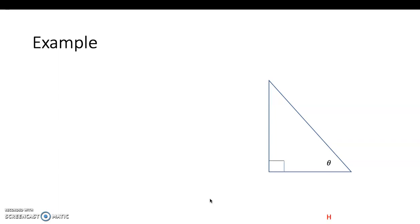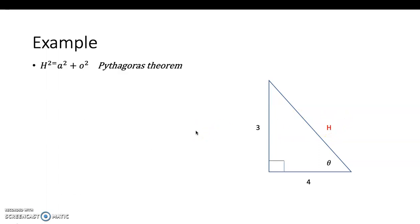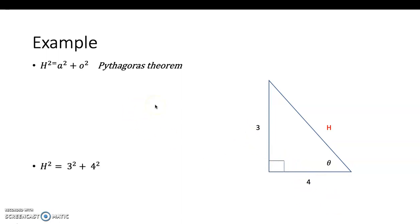Now let's do one example. In yesterday's example, all three sides of the triangle were given, but in today's lesson one side is missing. To write the trigonometric ratios, we first have to find side h. For finding h, we use the Pythagorean theorem: h² equals o² plus a². Plugging in values, h² equals 3² plus 4², so h equals the square root of 25, which is 5.